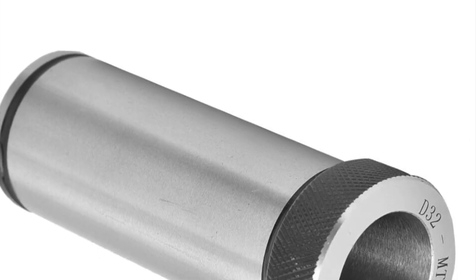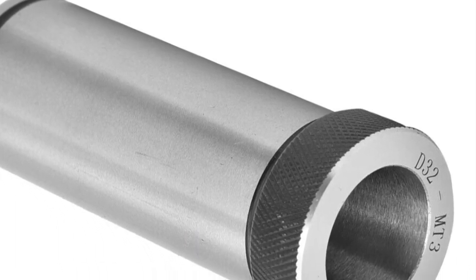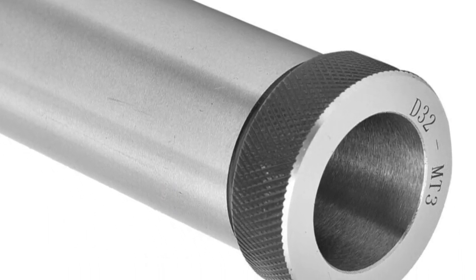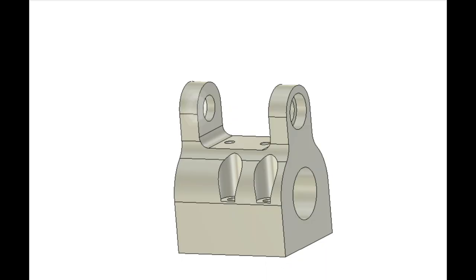The design is centered around a Morris Taper 3 reduction sleeve. The sleeve will be placed into a 3D printed block and bolted to a 5 inch sign plate.